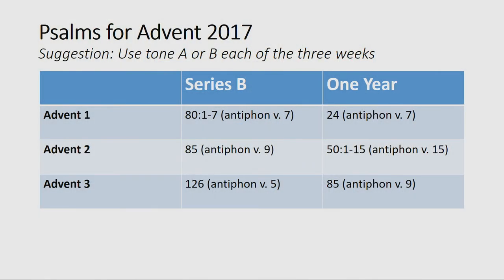A practical suggestion for congregations being reintroduced to psalm singing: with the upcoming season of Advent, use the Psalms of the week for each of your midweek Advent services. This particular year, since the fourth Sunday of Advent is December 24th, there will only be three midweek Advent services. You can see the Psalms assigned for those weeks — try using them at your midweek services. Because there are only three weeks and three Psalms, consider limiting yourselves to just one tone for all three weeks, such as Psalm tone A or Psalm tone B.